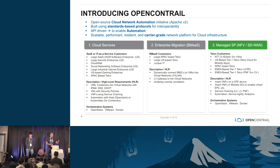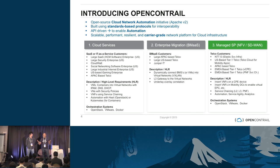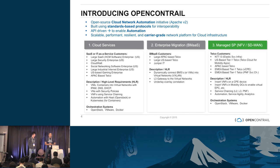CloudWatt is one of the subsidiaries of Orange — they use OpenContrail. There's social networking software enterprise, large industrial internet enterprise, gaming companies, and so on. Their requirement is basically how can I launch VMs and containers and provide micro-segmentation across them, essentially create virtual networks and provide micro-segmentation across those VMs. IPAM, DNS, and DHCP are some of the features that they look for, along with creating security policies.